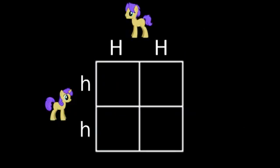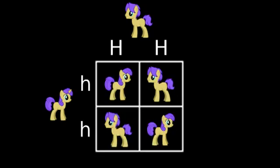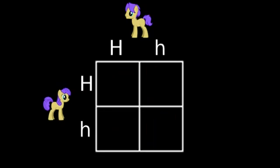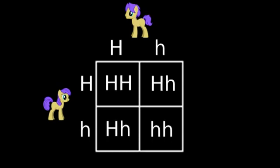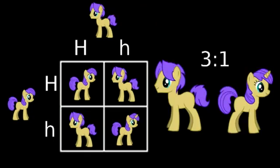This is a Punnett square. If you've taken high school biology, this should be immediately familiar to you. First, we're going to do a cross between a homozygous dominant earth pony and a homozygous recessive unicorn pony. This is our P generation, and this is our F1 generation. We should get nothing but heterozygous ponies, so they'll all be earth ponies. Now let's do it again, but this time taking the ponies from our F1 generation since they're all heterozygous. This should produce a 3-to-1 ratio of earth ponies to unicorn ponies in the F2 generation.